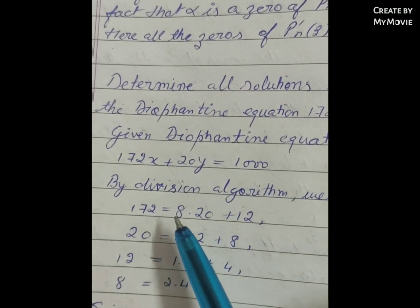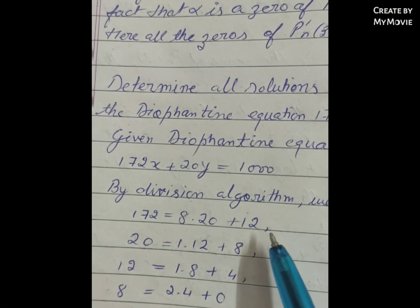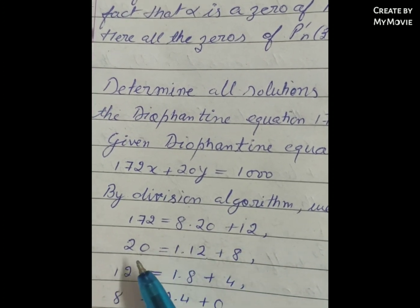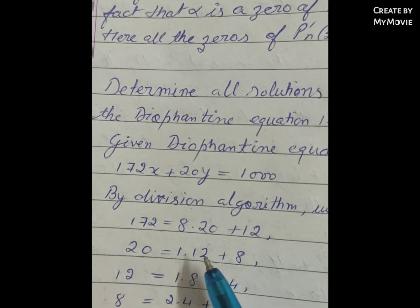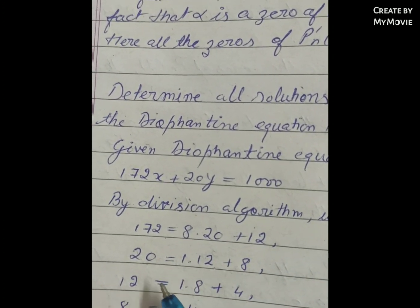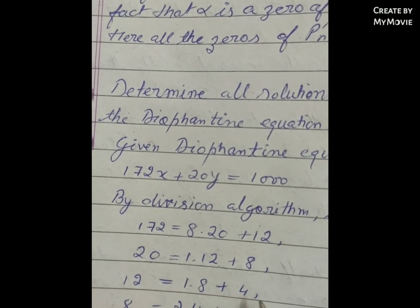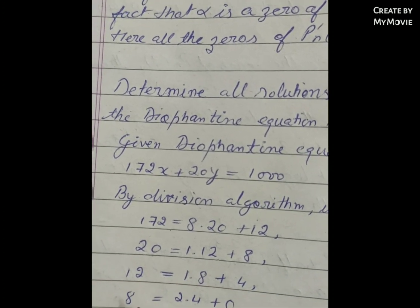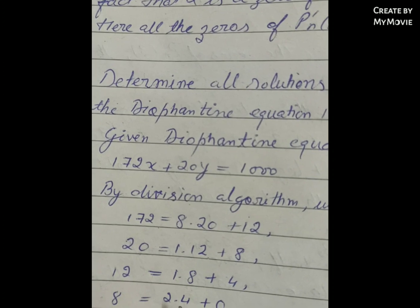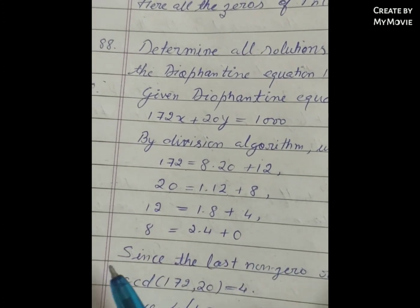172 = 8 × 20 + 12, and 20 = 1 × 12 + 8, and 12 = 1 × 8 + 4, and 8 = 2 × 4 + 0.